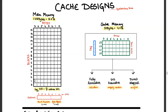If you take the block number and apply a modulo operation with the number of cache lines, the value you get is the index for that mapping. Block 0 modulo 4 = 0, so block 0 is always mapped to line 0. Block 4 modulo 4 = 0 as well. So blocks 0, 4, 8, and 12 are all mapped to L0. Block numbers 1, 5, 9, and 13 are always mapped to L1.